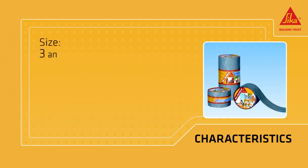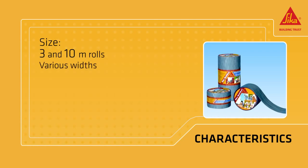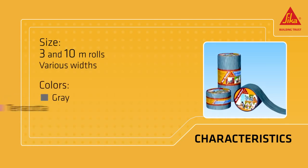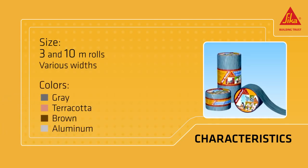It comes in rolls 3 and 10 meters long in a variety of widths. The range of colors includes gray, terracotta, brown, and aluminum.